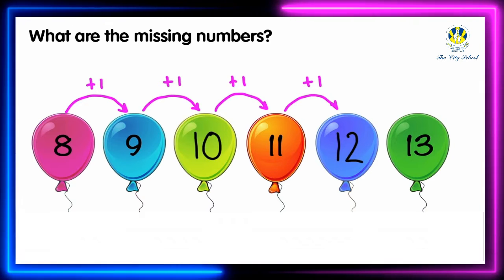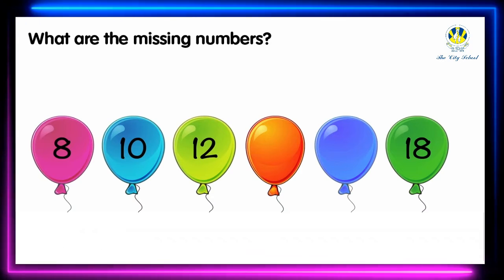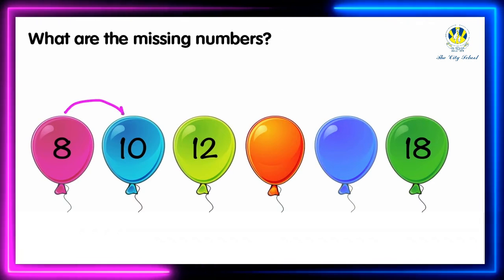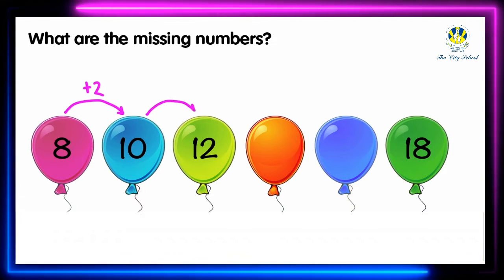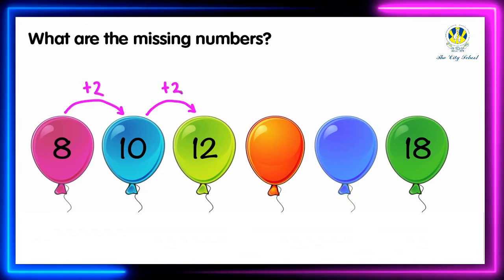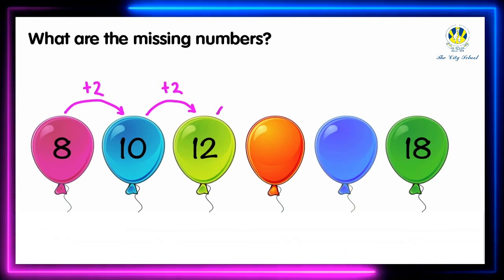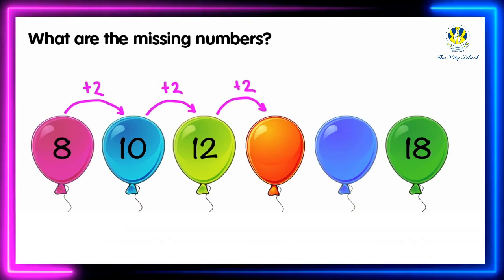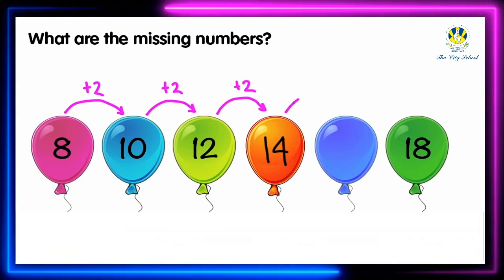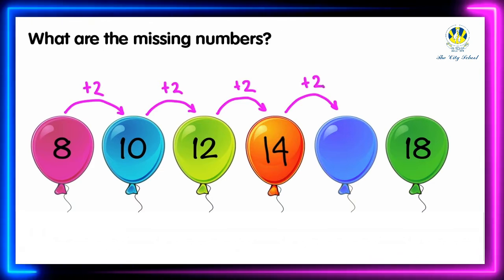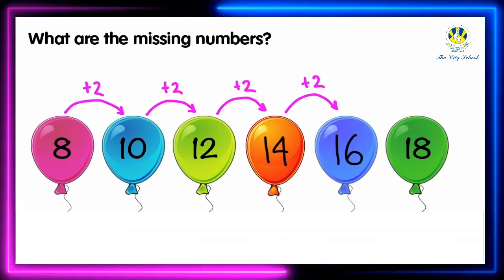Let's identify this pattern. 8 plus 2 equals 10, 10 plus 2 equals 12. In each step the numbers are increasing by 2. Therefore, the number pattern is to add 2 to get the next term. So 12 plus 2 equals 14, and 14 plus 2 equals 16. The number pattern is to add 2 to get the next term.